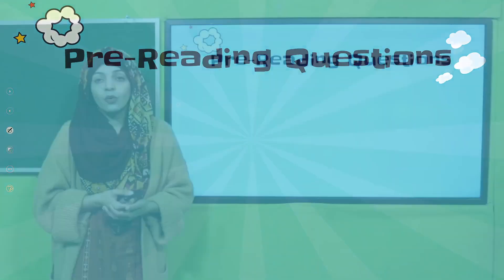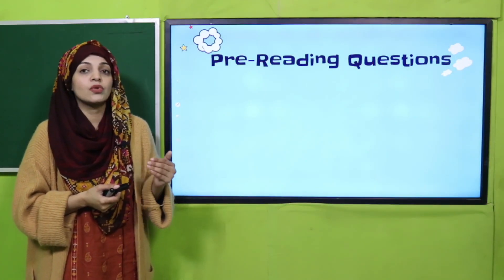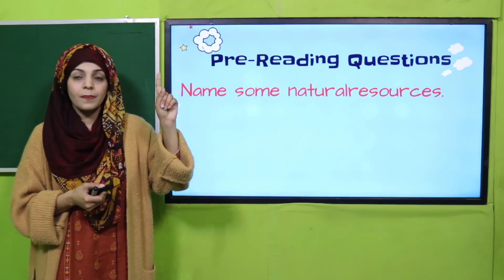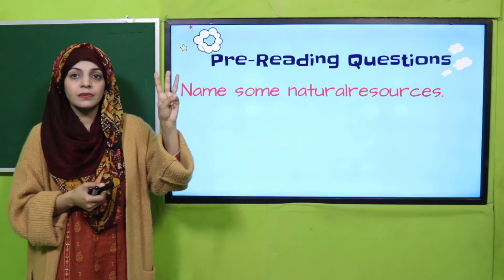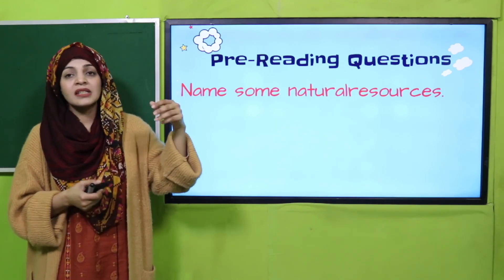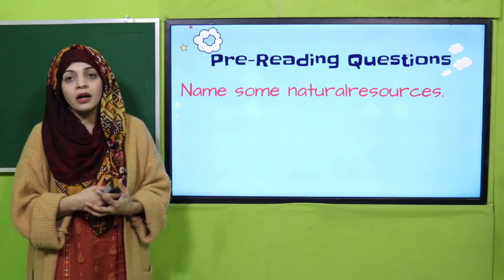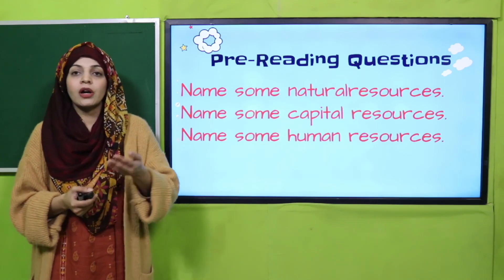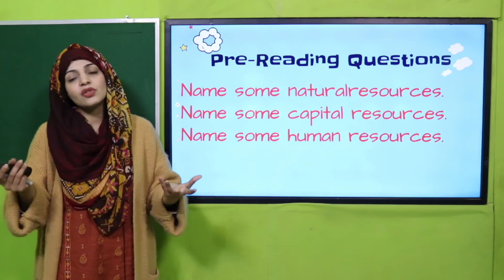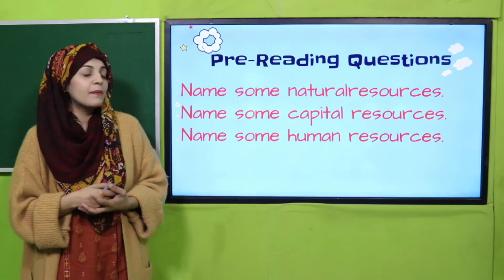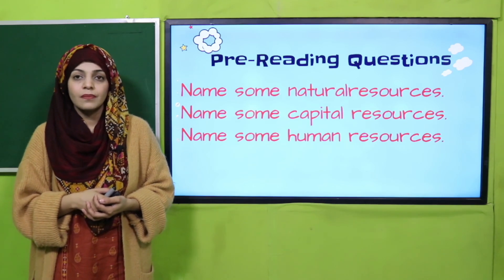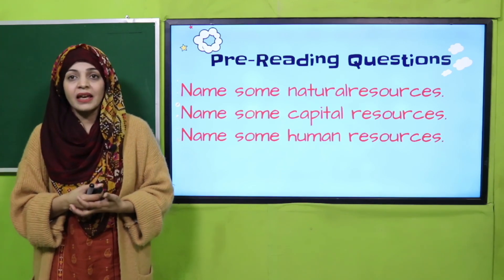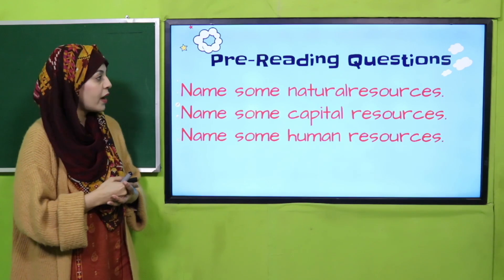Now is the time for pre-reading questions. You already know about human resources, capital resources, and natural resources. Quickly name some natural resources — air, water, sun, land, forest, trees, animals — these are all natural resources. Name some capital resources — table, chair, pen, pencil, bag, computer, mobile — these are all capital resources. Name some human resources — doctors, teachers, gardener, carpenter, mechanic — these are all human resources.